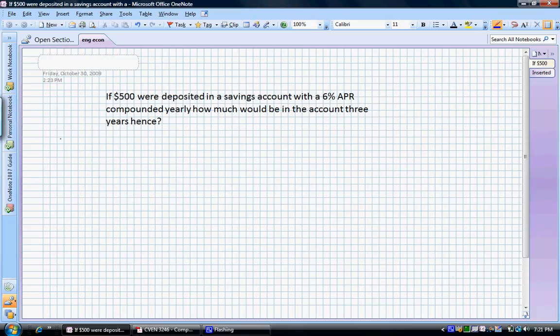Step number two is to write down what we know and what we don't know. In this problem, we are given a P of $500. That means an initial investment of $500. We have an I, interest rate, of 6% APR. And the total period of the investment is three years.